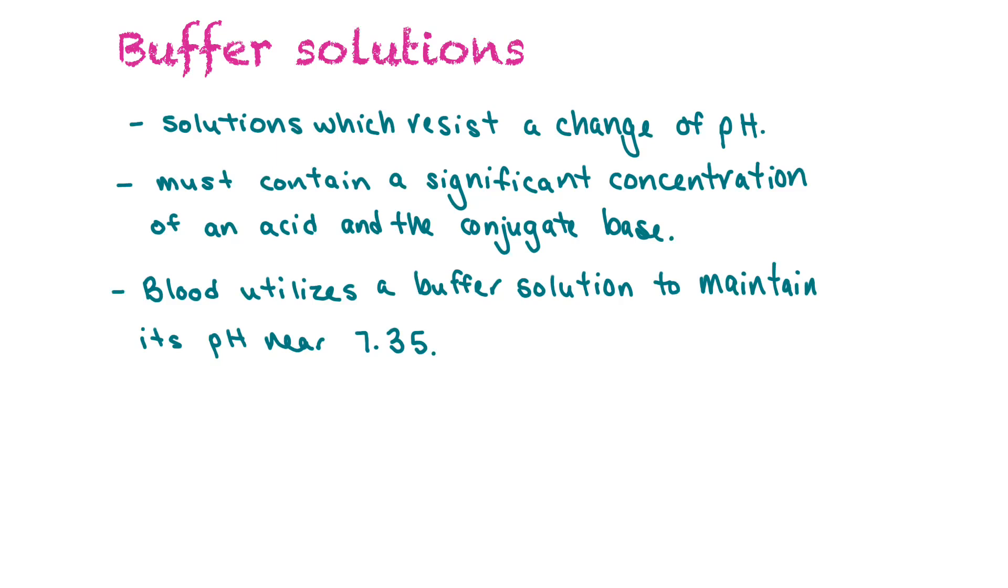Blood actually uses a buffer system to maintain its pH near around 7.35. If the pH rises above 7.7 that's known as alkalosis, or if it drops below 7.0 that's known as acidosis and the results can be fatal. So our body needs to maintain a consistent pH so it uses a buffer system to do so.